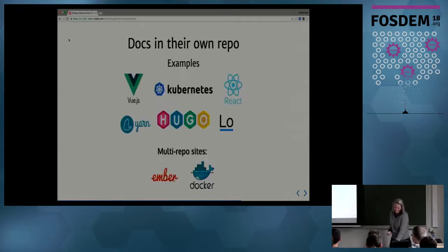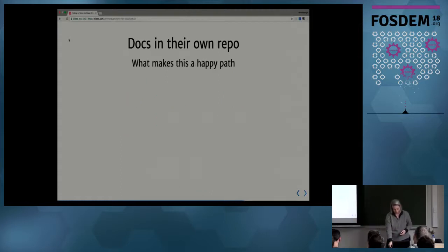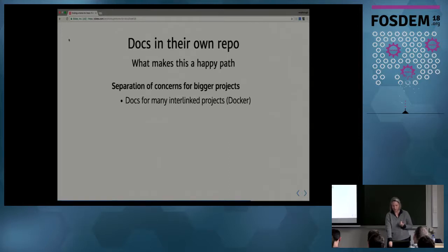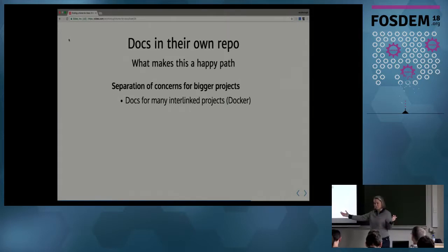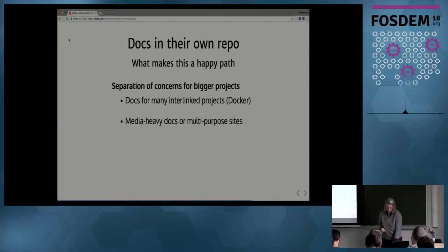The separate docs repo option is by far the most popular with really big projects. Ember and Docker actually have multi-repo sites — marketing in one, docs in another, with code spread across dozens of other repos. This is good because it separates your concerns. When you have many different interlinked projects to document all in one giant site, you can't store the docs in each individual repo. Docker pulled all their docs out of their repos into one giant docs repo, so whether you're doing docs for Swarm, Moby, or any other part, it's all in one place.